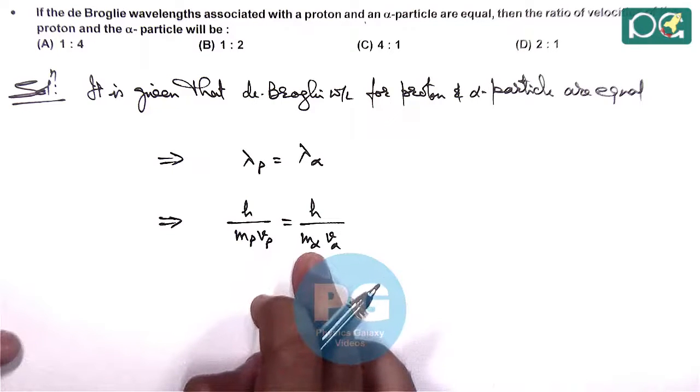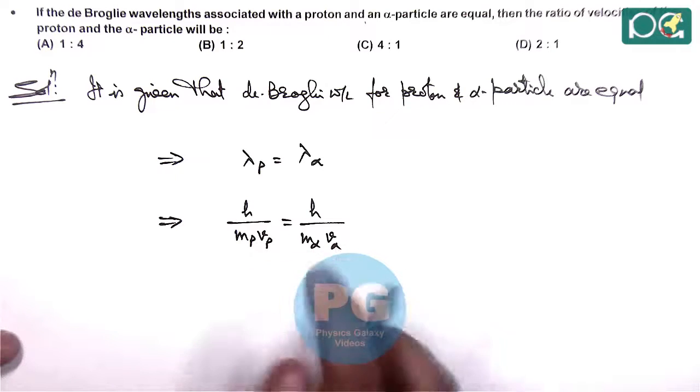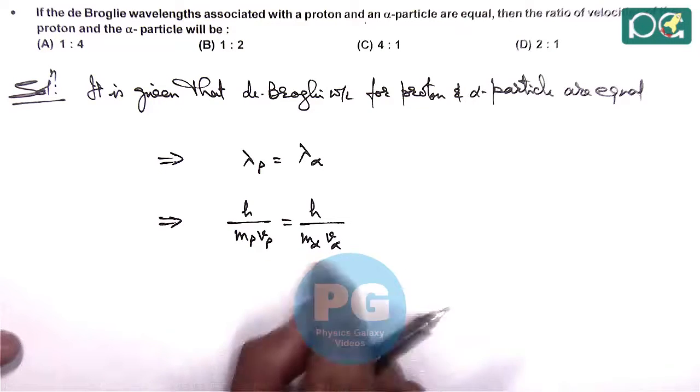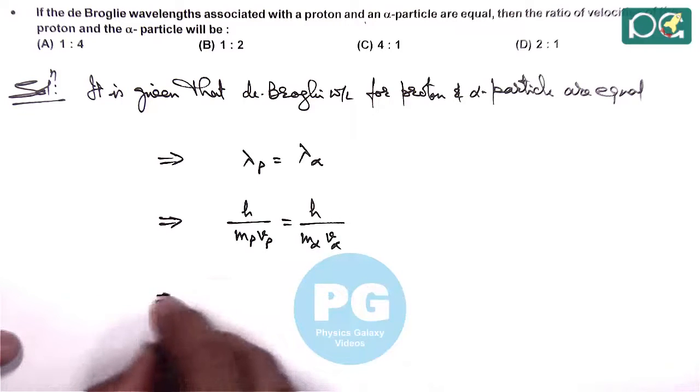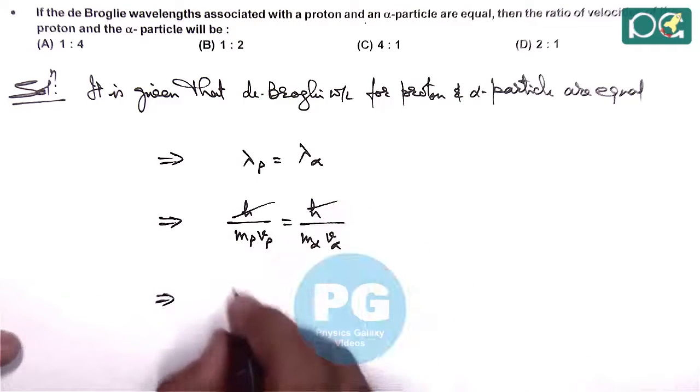Where m_p and m_α are respective masses of proton and alpha, and v_p and v_α are the corresponding velocities of proton and alpha particles. So h cancels out, and we get...